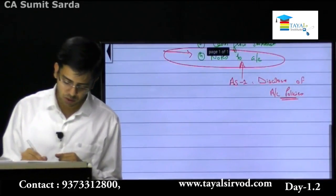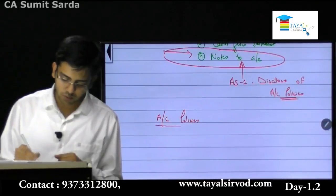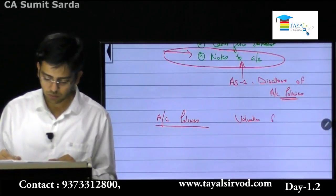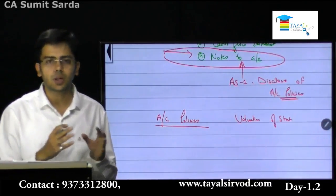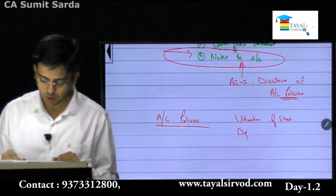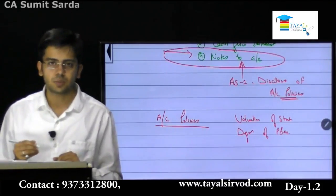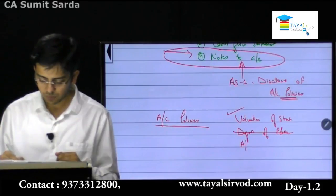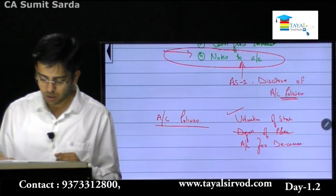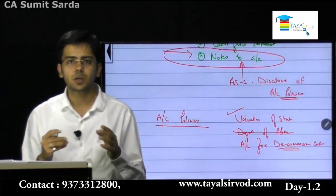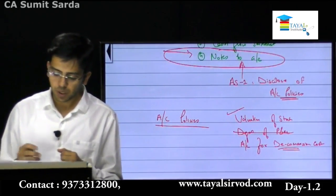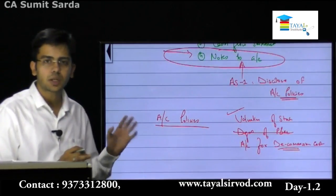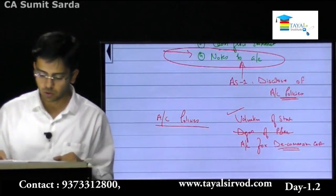The first aspect is: what are accounting policies? How we have accounted for the various aspects is what accounting policies are. For example, valuation of stock is an accounting policy. Accounting for decommissioning cost - which we will deal with in AS10 - is another. There are various such points on which we see how we are going to do the accounting, what accounting concept we are going to apply. That will be the policy of the company, and how we apply it is the method.